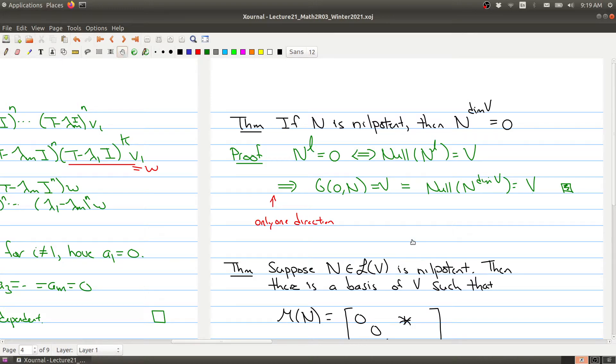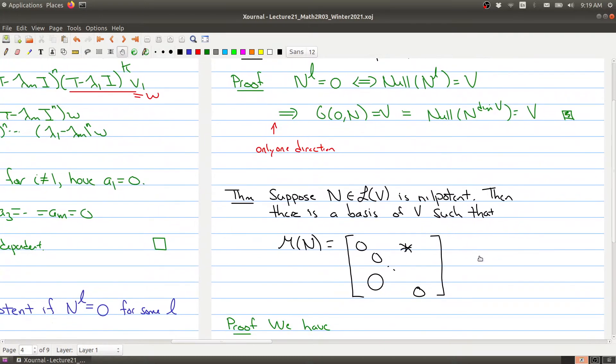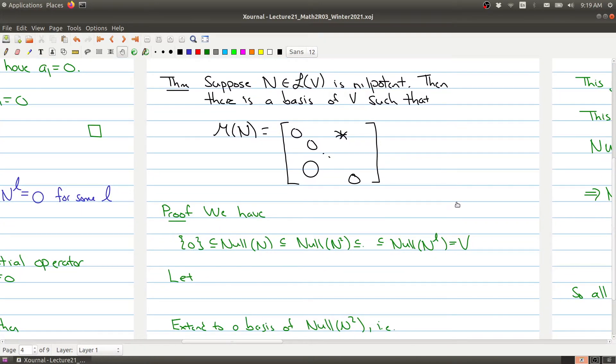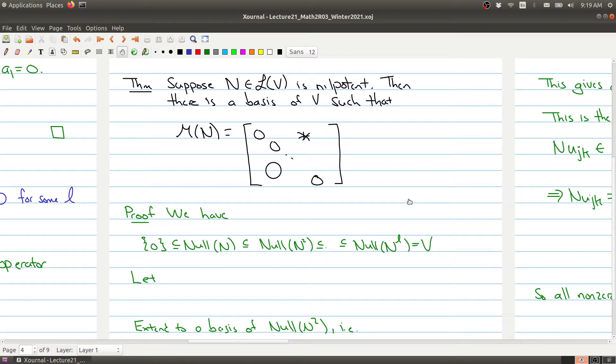What we're going to spend the rest of this part proving is another theorem that's a little bit more complicated. When you have a nilpotent operator, there's actually a choice of bases of the vector space V so that the matrix associated with that nilpotent operator is an upper triangular matrix with all zeros down the diagonal, zeros on the left-hand side, and some non-zero elements on the upper right.